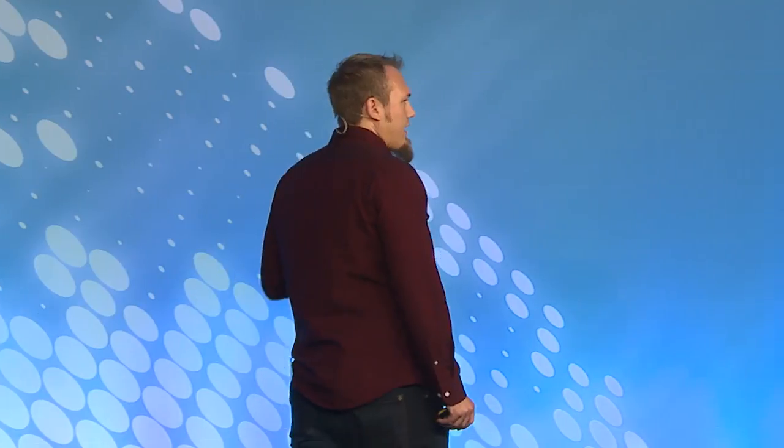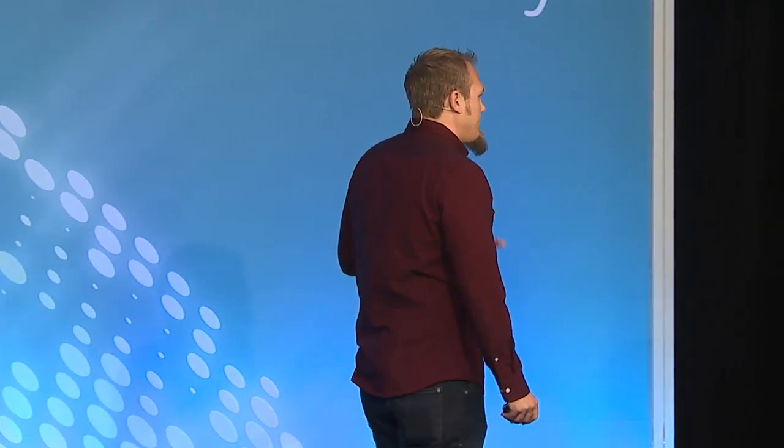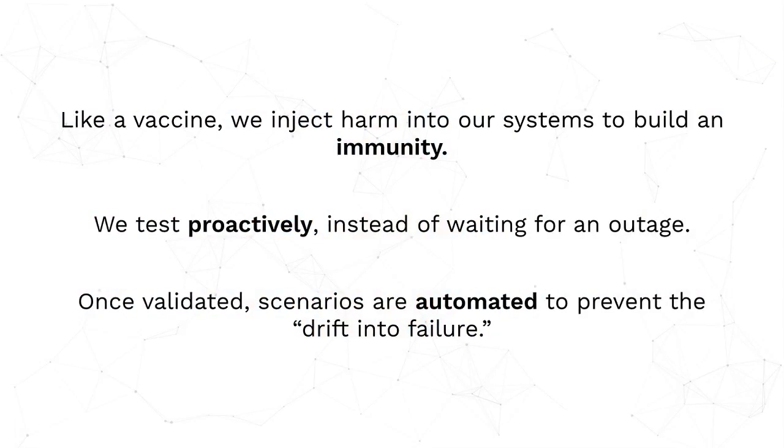So what is chaos engineering? The analogy that I like to draw — one that I could explain to my grandma and works well — is that of the vaccine. We're going to inject something harmful in order to build an immunity. It might be a bit counterintuitive, and oftentimes when I talk to companies or teams looking into this, the executive response is a little withdrawn — it's a little bit, 'you want to do what?' But bringing it home with the vaccine helps us relate it to things we're comfortable with and understand. But it's more than just this concept of hormesis, this concept of the vaccine.